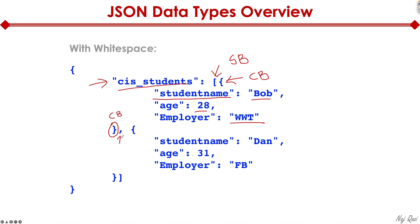And then we have the ending curly bracket. And then we have a comma. And then we have a starting curly bracket for the second student. So student is Dan, age 31, employer Facebook. And then we have the ending curly bracket. And then we have the ending curly bracket to end the entire code. As you can see, here we're showing computer information system students, let's say in a college or university, and different attributes associated with each student in that course.